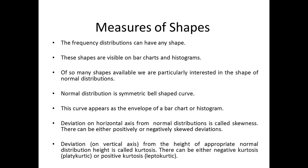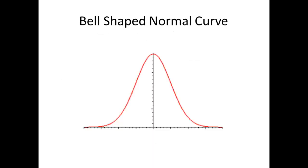We are particularly interested in a specific type of shape: the normal distribution shape of the frequency distribution diagram. Frequency distributions can have any shape; these shapes are visible on bar charts and histograms. Of all the shapes available, we are particularly interested in the normal distribution, which is a symmetric bell-shaped curve. It is symmetric — whatever area is on the right-hand side of the center of symmetry is the same as the area on the left-hand side.